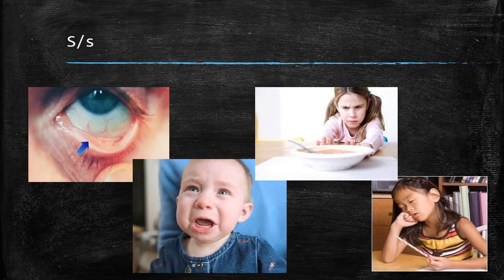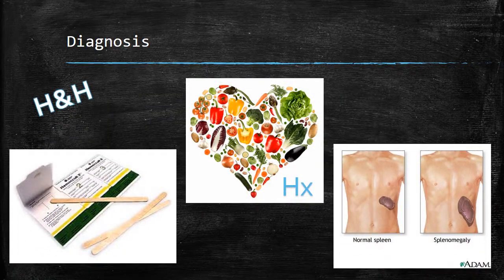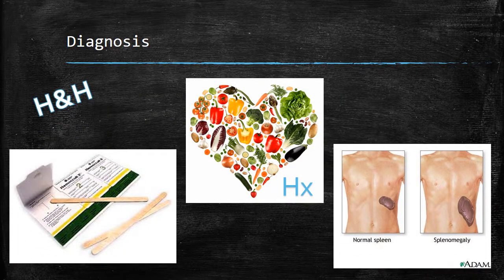Signs and symptoms: for acute — pallor, fatigue, irritability. For chronic — nail bed deformities, clubbing, growth retardation, developmental delay, tachycardia, systolic heart murmur, and/or pica. For diagnosis, we're going to get a history to determine possible cause such as whether it's diet-related. We're going to do diagnostic labs such as CBC, H&H, and a fecal occult blood test. Normal hemoglobin levels: newborn is 14 to 24, infant is 10 to 17, and a child should be 9.5 to 15.5.